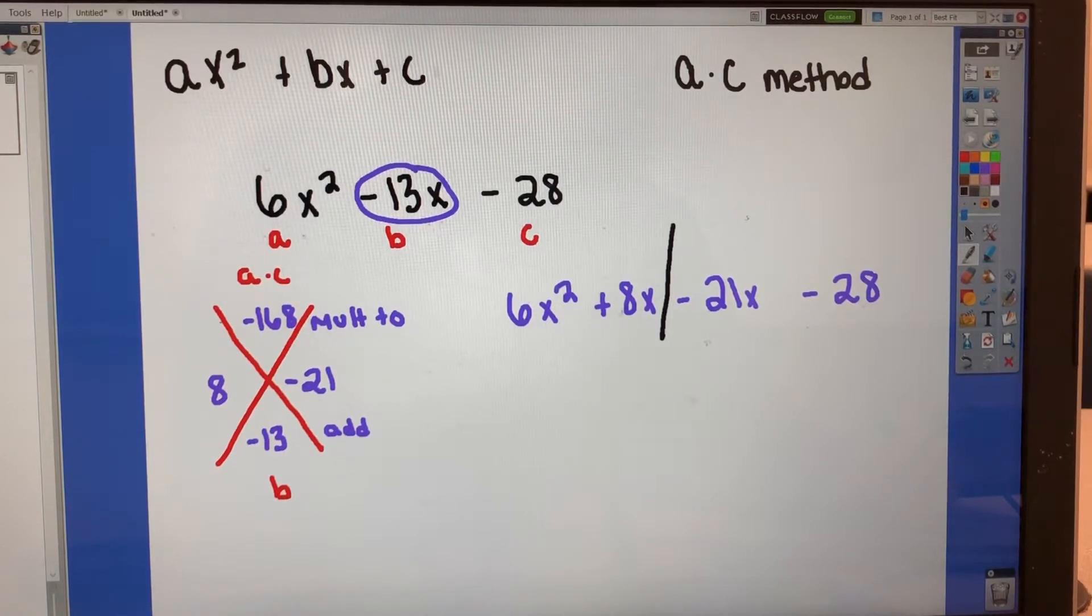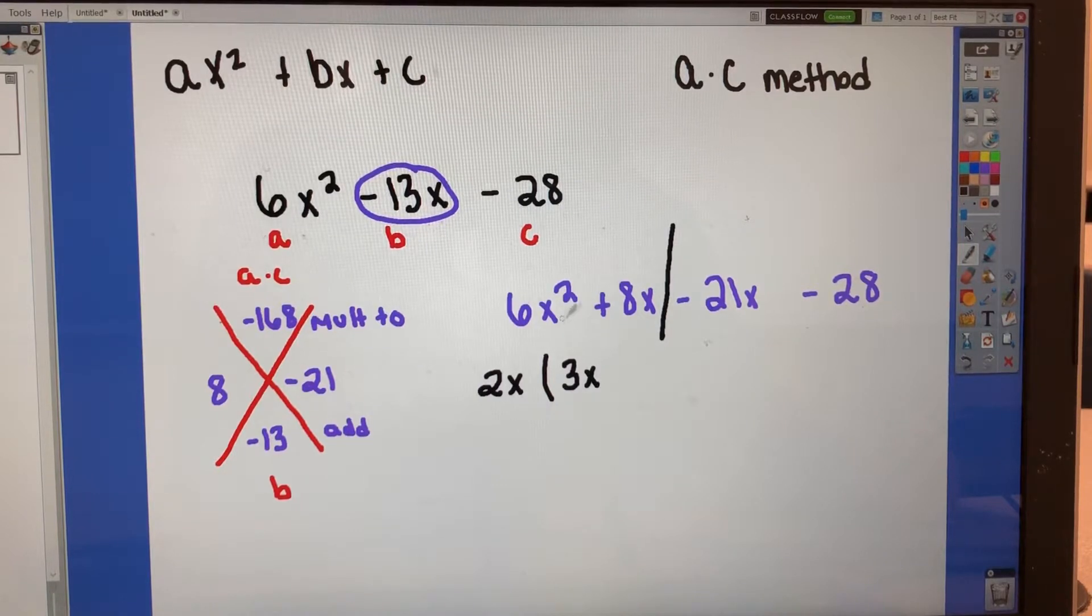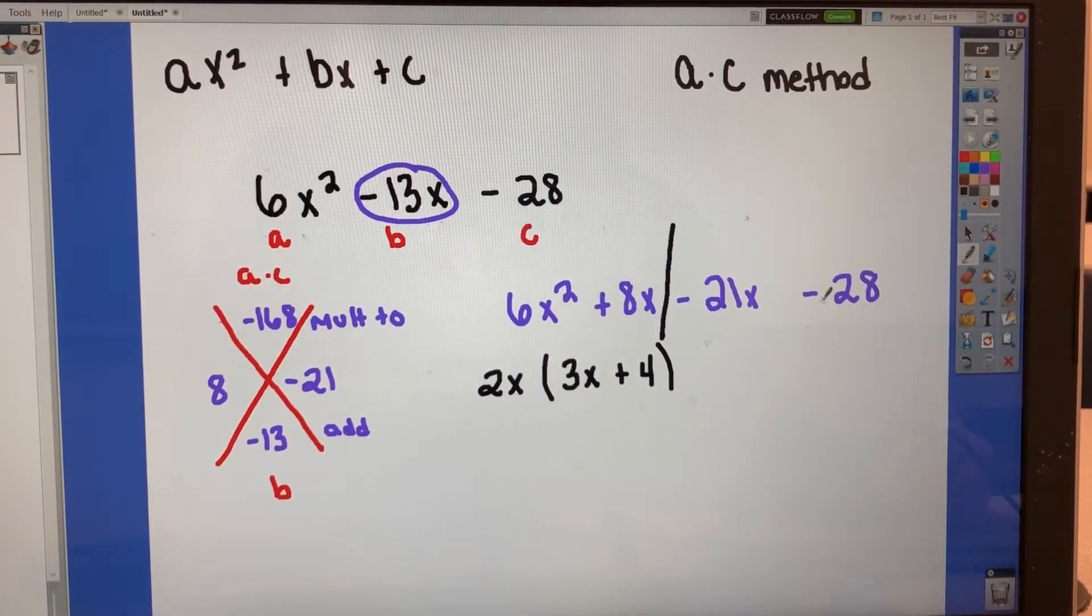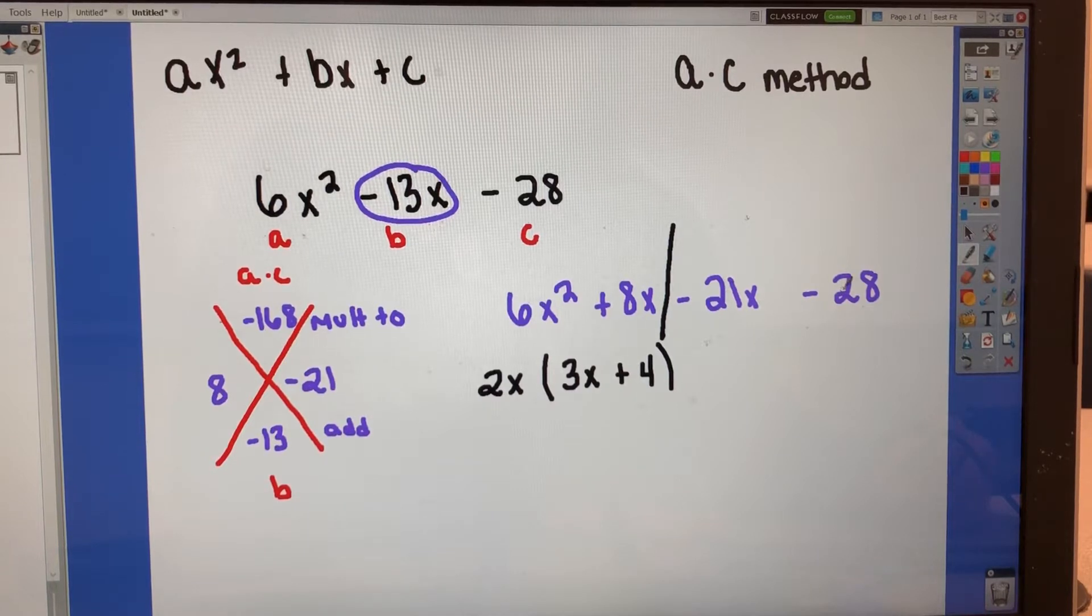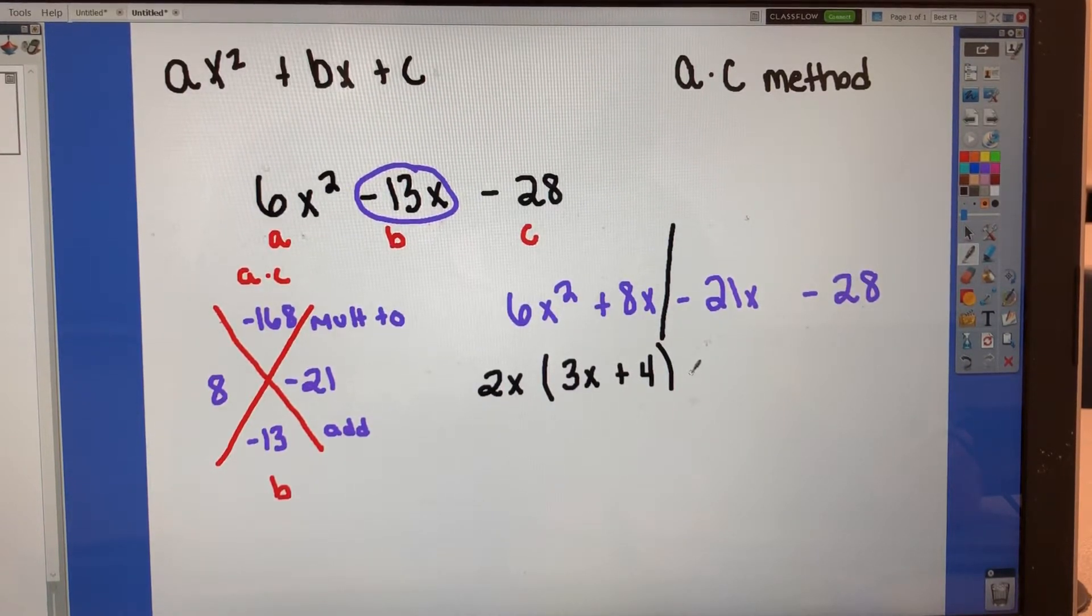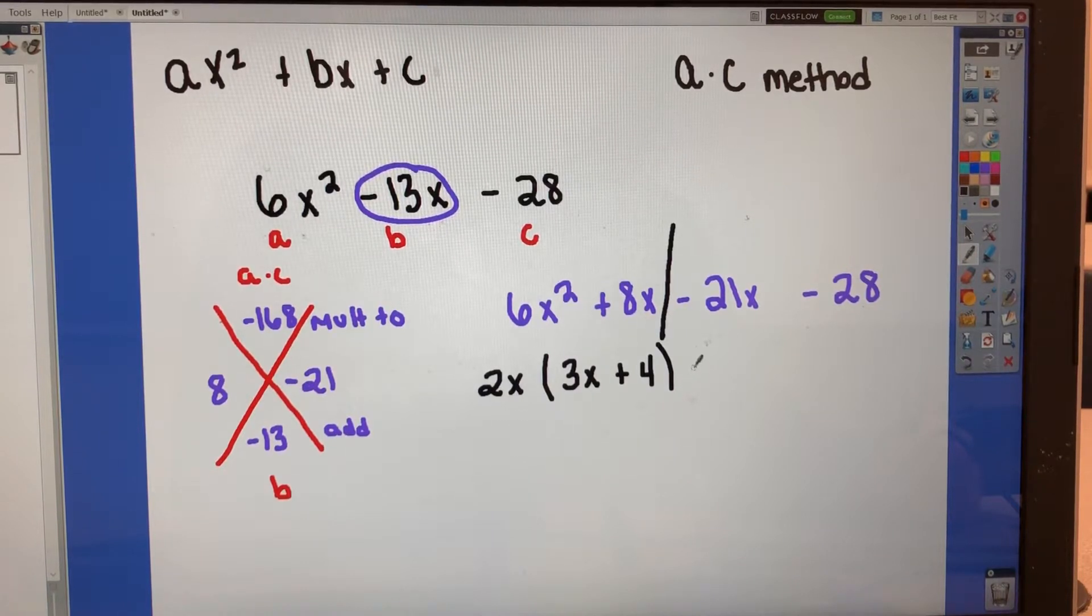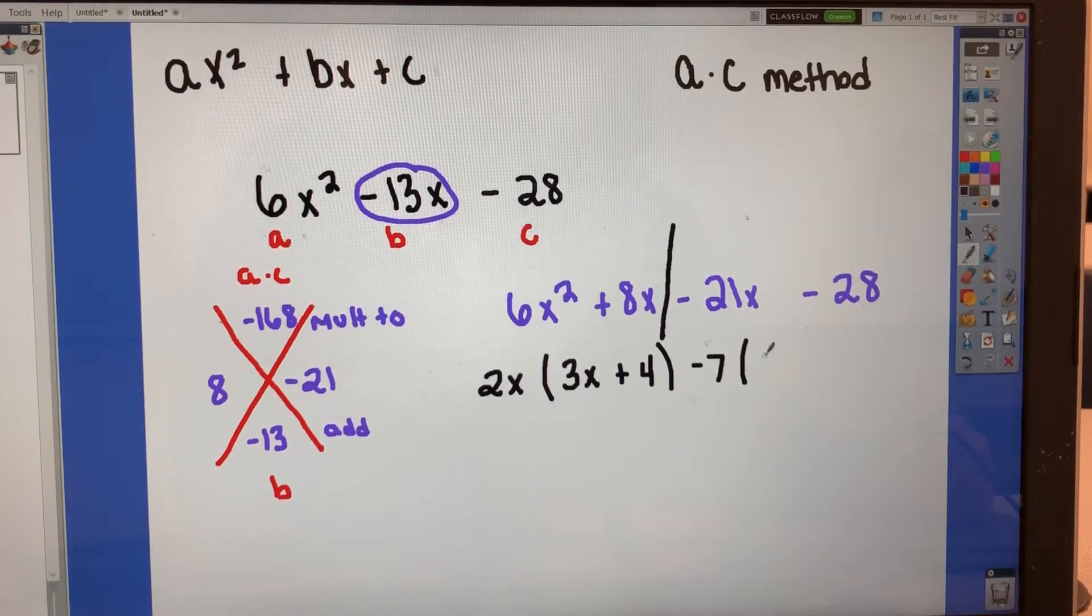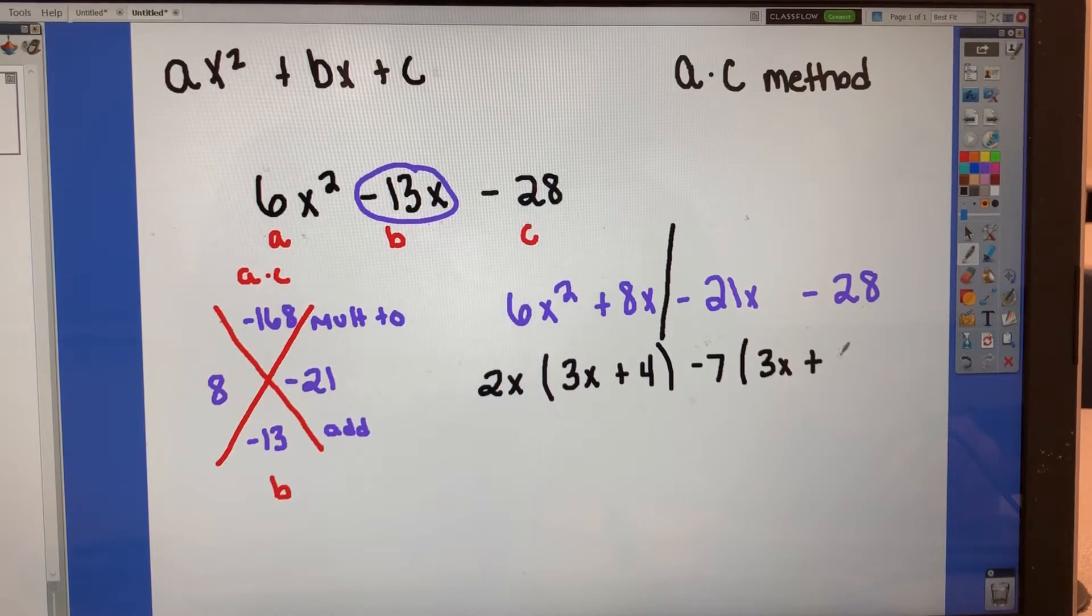So now factor by grouping. We take out a GCF. So this GCF is going to be a 2x. So 6x squared divided by 2x is going to give me a 3x. And then 8x divided by 2x is going to give me a positive 4. Then I'm going to take a GCF out of here. Negative 21 and negative 28. So that is going to have a GCF of negative 7. And negative 21 divided by negative 7 is a 3x. And negative 28 divided by negative 7 is a positive 4.